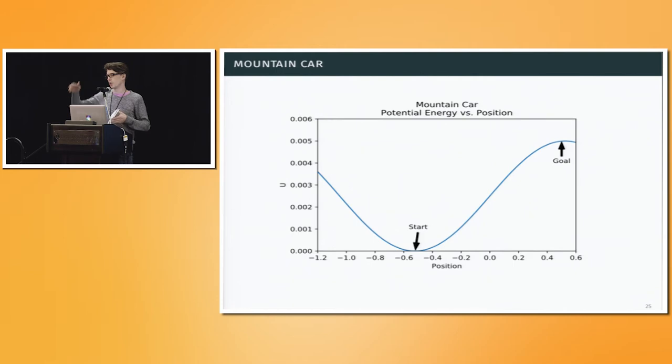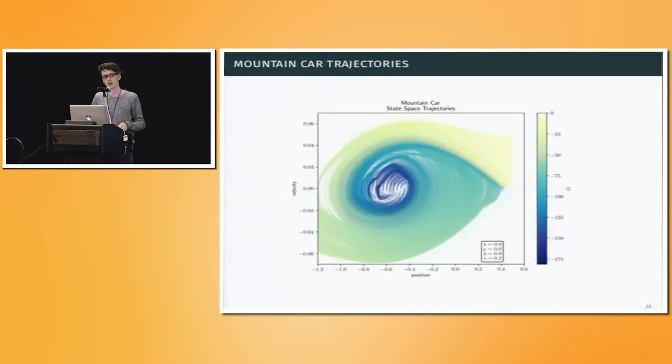It has to build up momentum by traveling backwards and then using the additional speed it can build up in order to slowly ramp its way up to the top of the hill. It gets a feature that tells it its position and velocity. We're focusing on the prediction setting, not the control setting. So we first trained an agent to solve this task, then froze its policy, and then we used that as our test policy to compare these two algorithms.